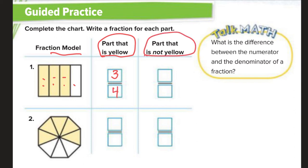What is the fraction of the part that is not yellow? Well, that's just one piece is not yellow, out of one, two, three, four total pieces. So, three-fourths of this shape is yellow. One-fourth is not yellow.